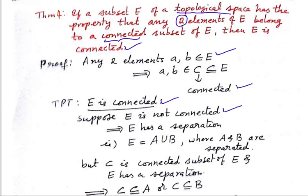Suppose E is not connected. That means E has a separation — I can write E as the union of two sets A and B which are separated. And we know what separated sets are: A ∩ B̄ = ∅, which equals Ā ∩ B.